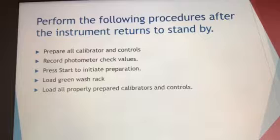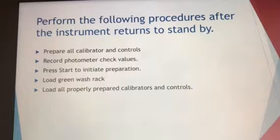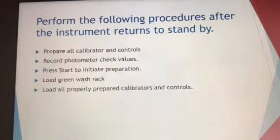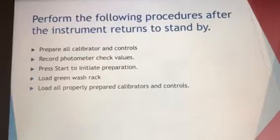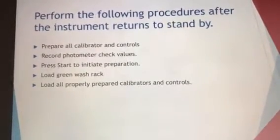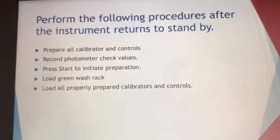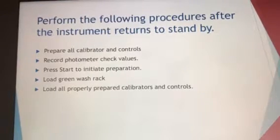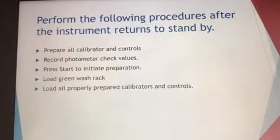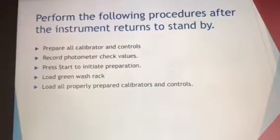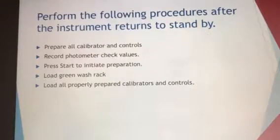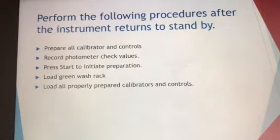During that 70 minutes, start preparing your calibrators and controls, and get your green wash rack ready to go on — remember that always has to go on first. Record your photometer check under print view in the daily maintenance log. Once the green rack, calibrators, and controls are prepared and the weekly pipe is finished, press the Start button. It will go into preparation, run all your controls and calibrators, and print off results as they finish. Handle any issues such as rerunning QC or recalibrating as they come.